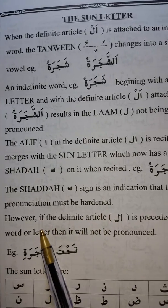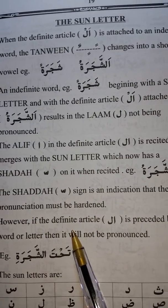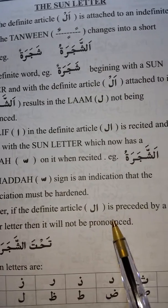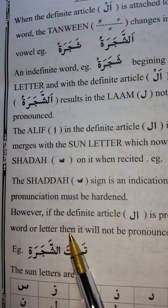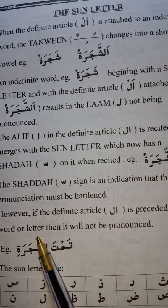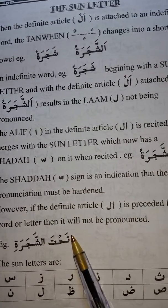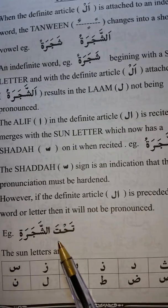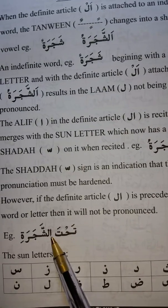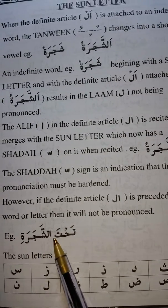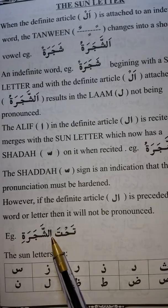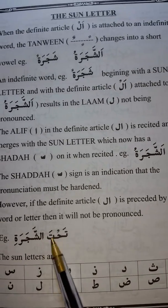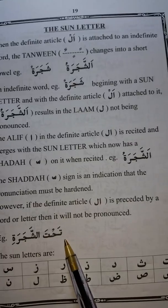However, if the definite article Alif Lam is preceded by a word or letter, then it will not be pronounced. For example, Tahtas Sajaratun. You see, the Alif Lam is not pronounced anymore because there is another word at the front of it.